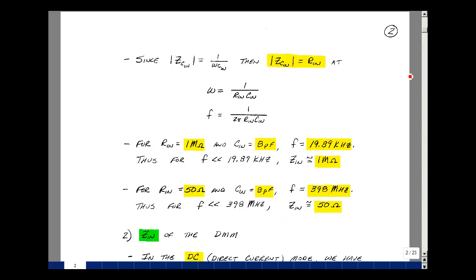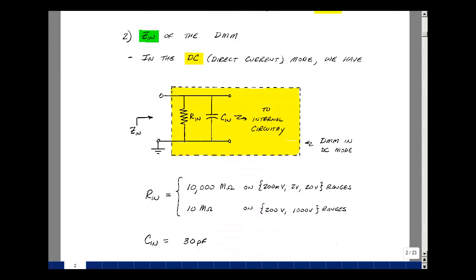What about Z-in of our digital multimeter? It too has several modes, one of which, again, is DC. Here, it usually means direct current, although we are directly coupling to the meter. And it too has an R-in and a C-in. Depending on the scale that you're in, R-in can be 10,000 megaohms. This would be on the 200 millivolt, 2-volt scale, and 20-volt scale. Now, if you go on the higher voltage scales, it drops to 10 megaohms. And still, in both cases, this is much bigger than our oscilloscope. The value of C-in is about 30 picofarads. So we can, again, calculate a frequency range where our input impedance is just a very high resistance.